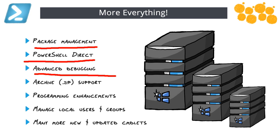Anybody try to compress or decompress files prior to PowerShell 5? It requires a lot of code and is unstable at best. Now we have two cmdlets — very simple one-liners to zip and unzip files. Huge.